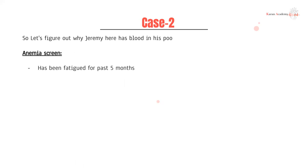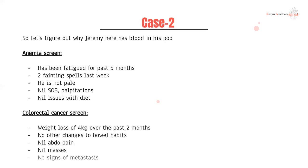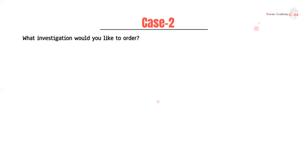Anemia screen: he's been fatigued for the past five months — this could be significant. He's had two fainting spells last week. He's not pale, no shortness of breath or palpitations, no issues with diet. Ask if they've had any recent changes to their diet. Colorectal cancer screen — with lower GI bleeds we always worry about cancers: he's had four kilograms of weight loss over the past two months. No other change to his bowel habits, no abdominal pain, no masses, and no signs of metastatic spread.